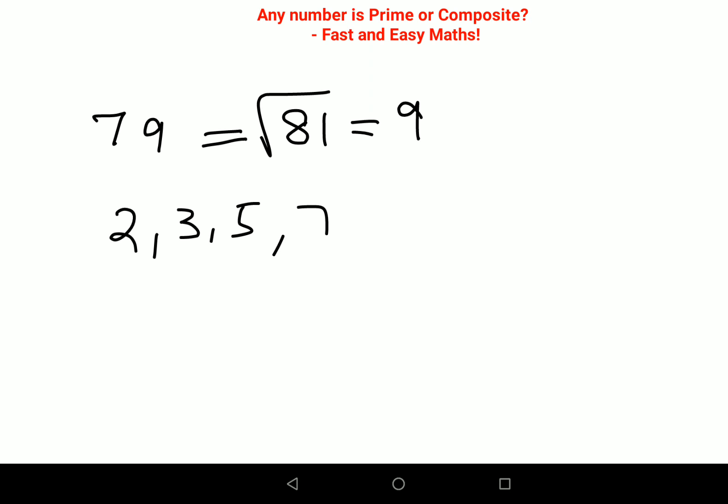We know that it is not an even number, so I can say that it is not divided by 2. Similarly by 3, the addition of 7 and 9 is 16, and 16 doesn't completely get divided by 3, so 79 is non-divisible by 3. The last digit is neither 5 nor 0, so obviously it's non-divisible by 5.